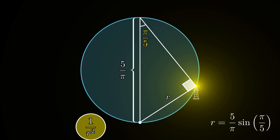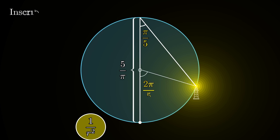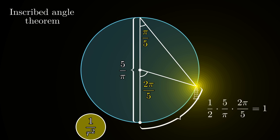The apparent brightness to the observer is then 1 divided by (φ/π × sin(π/φ))², The angle subtended by the observer and the lighthouse at the center of the circle is 2π/φ by the inscribed angle theorem. The distance between the observer and the lighthouse along the circle is then this angle times the radius of the circle, which works out to be exactly one unit.